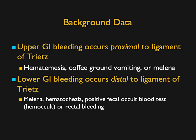For background: upper GI bleeding proximal to the ligament of Treitz presents classically with hematemesis, coffee-ground vomiting, or melena. Lower GI bleeding, distal to the ligament of Treitz, presents with melena, hematochezia, positive fecal occult blood test, or visible rectal bleeding.